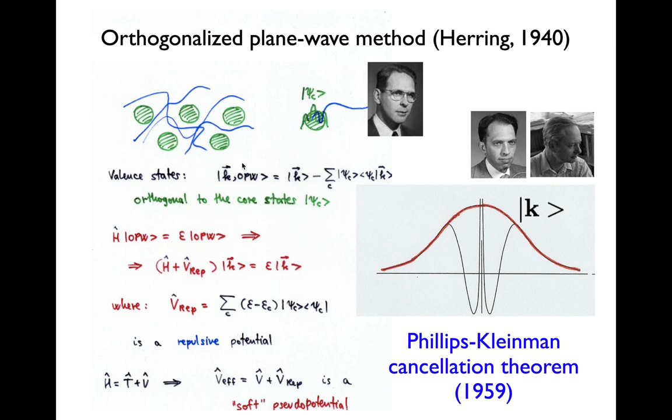Now when you take this trial wave function in the Schrödinger equation, you end up with an effective equation for the soft part, which has this repulsive operator. Repulsive because this is a positive term,